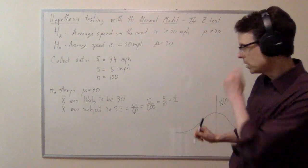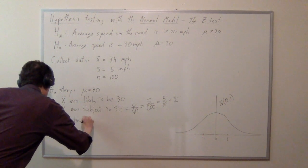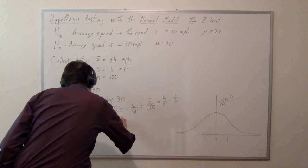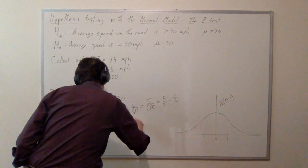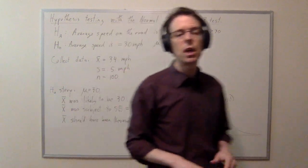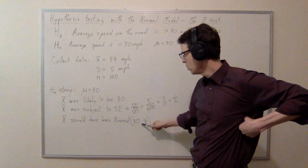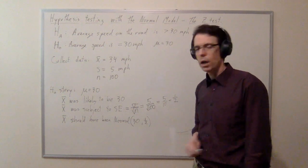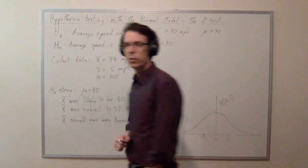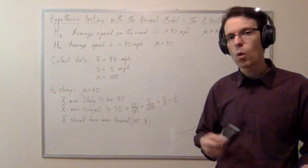So x-bar was subject to the standard error. Invoking the normal distribution: x-bar should have been distributed normally with a mean of 30 and a standard deviation of 0.5. Before we even carry out the experiment, x-bar should have been distributed normally with a center of 30 and a variability of 0.5. The variability of x-bar is the standard error, because it's the variability in the final result, as opposed to the variability from one data point to another.